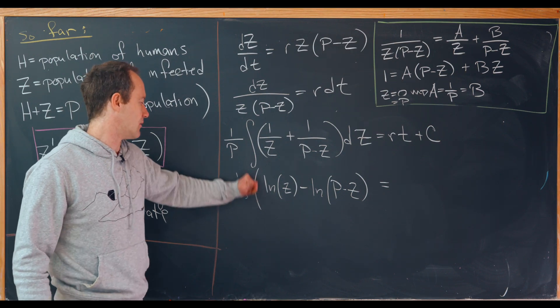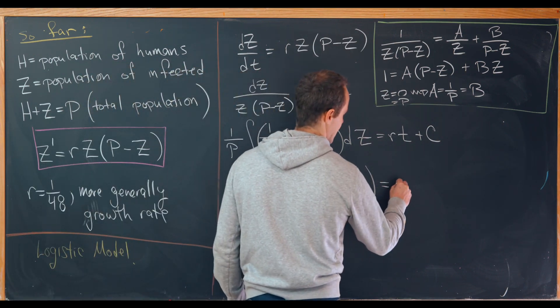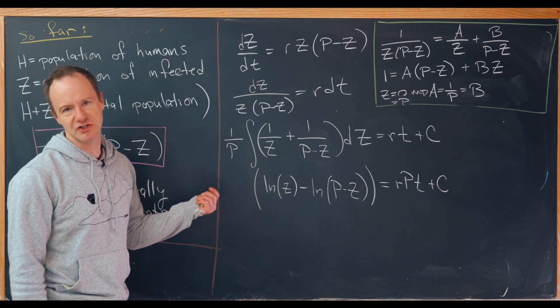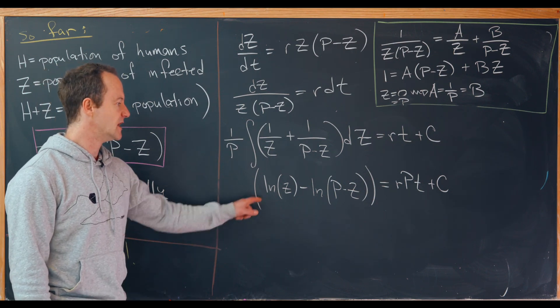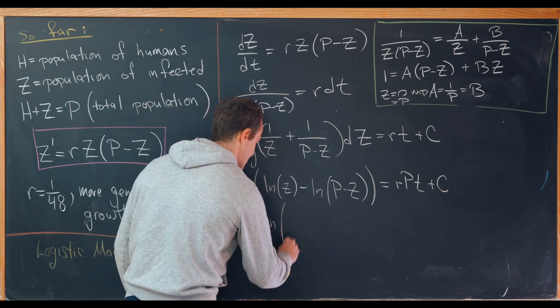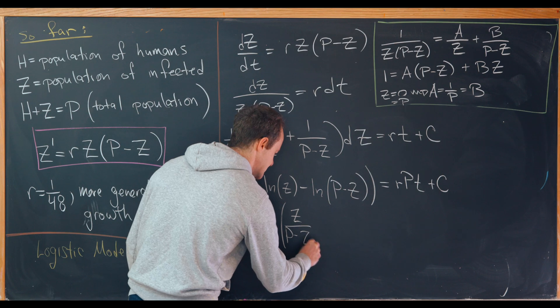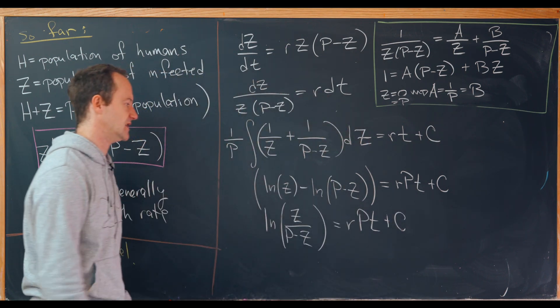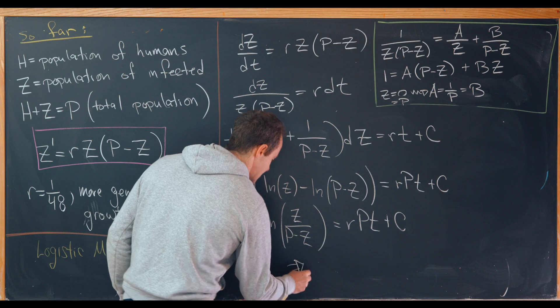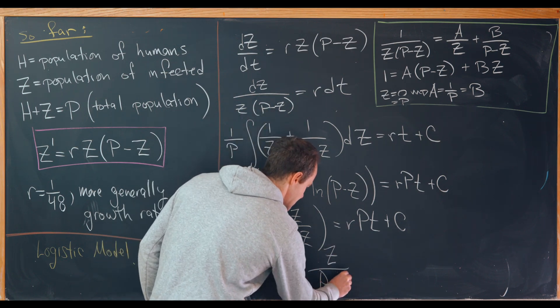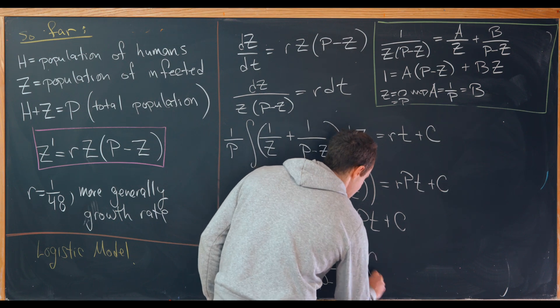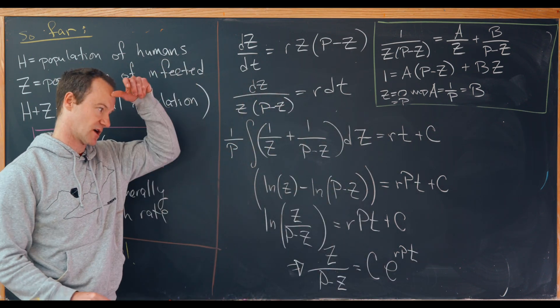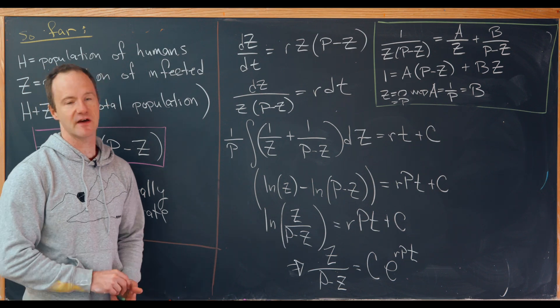But maybe I'll take this and I'll multiply both sides by P just to simplify. So we have RP times T plus our constant C. I'll absorb that P, which is just a number, into the constant. Now I can use logarithm rules to rewrite this as the ln of Z over P minus Z is equal to R times P times T plus C. And then we can exponentiate both sides and we'll end up with Z over P minus Z equals some new constant times E to the RP of T. Where I took advantage of renaming the constant as well as exponent rules to simplify that right-hand side.